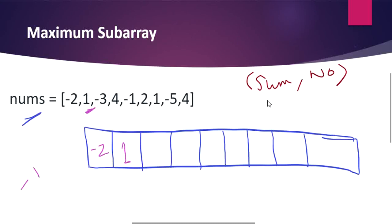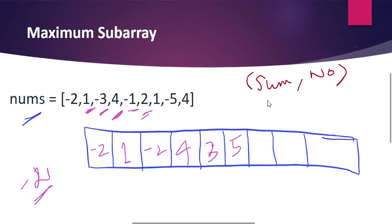Moving to minus 3: adding minus 3 with plus 1 gives minus 2, but minus 3 is lesser than minus 2, so we fill minus 2. Moving on to 4: adding minus 2 plus 4 gives 2, but 4 itself is a higher value, so we fill 4. Moving to minus 1: minus 1 is much lesser than 3, so we fill 3. Moving on to 2: adding 2 plus 3 gives a higher value than 2 alone, so we fill 5.